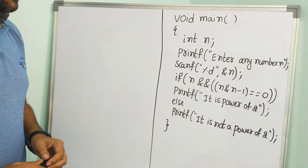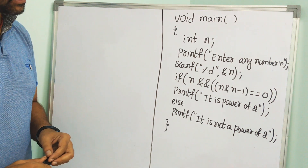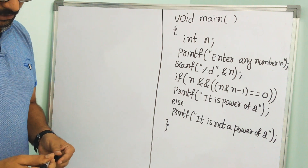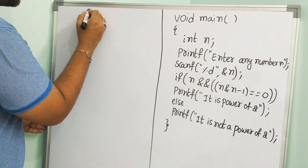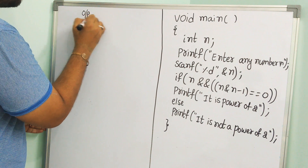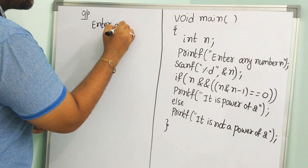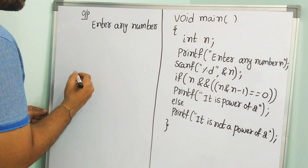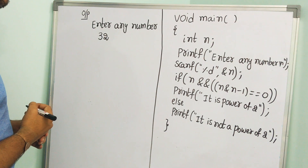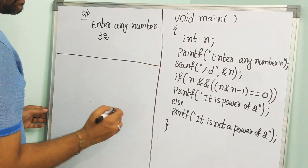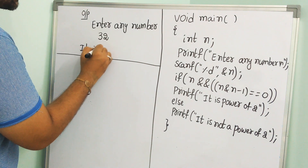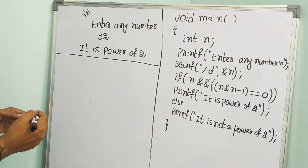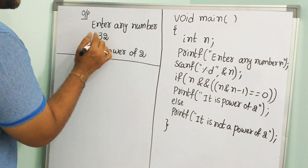We are looking at a C program which is frequently asked in interviews to check whether a given number is a power of 2 or not. For example, the user is going to enter a number in the output screen. If the number entered by the user is 32, it is going to produce the output: it is a power of 2.